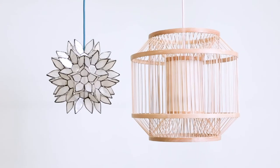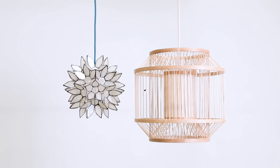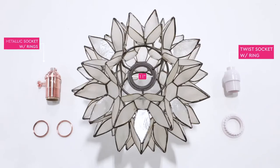Next we'll check out the 1 and 1 half inch Uno Fitter shade opening and which of our sockets work best. Uno Fitter shades have a 1 and 1 half inch shade opening, so it's a bit smaller than the more common Eurofitter. You will find that our twist socket with ring and metallic socket with rings work best for Uno shade openings.